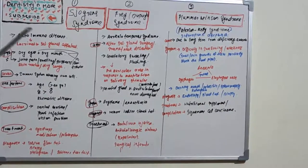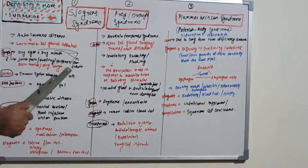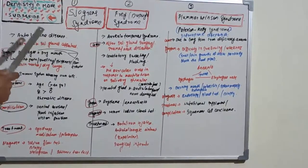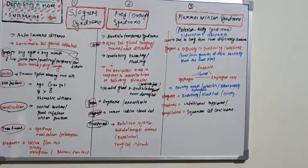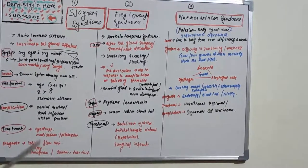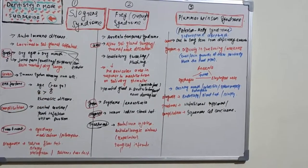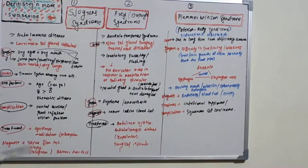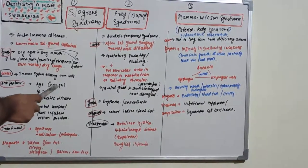The immune system affects the lacrimal glands and salivary glands. These glands are supposed to produce saliva and tears, so when they are affected there will be improper production of both, resulting in dry eyes and dry mouth. It is most commonly associated with rheumatoid arthritis. Risk factors include age — 40 years or greater — which is the typical age group for diagnosis.